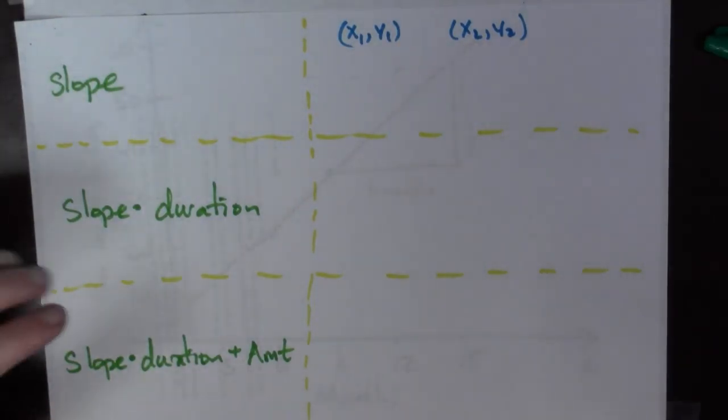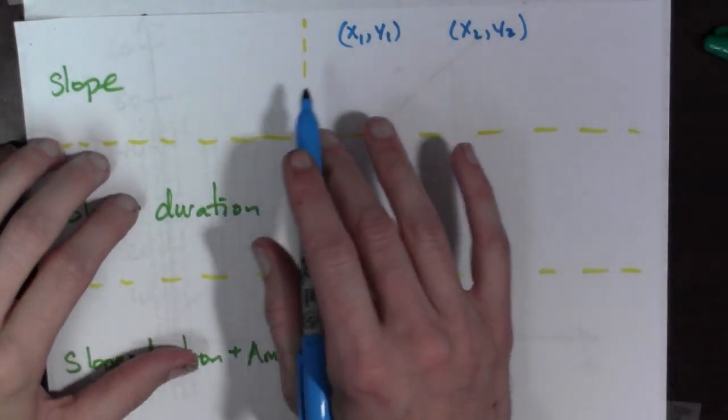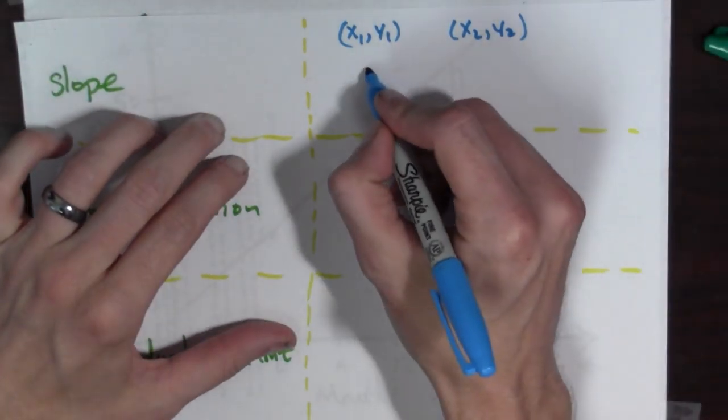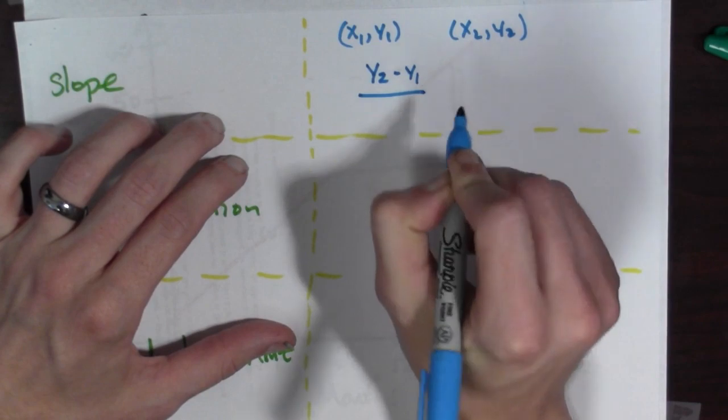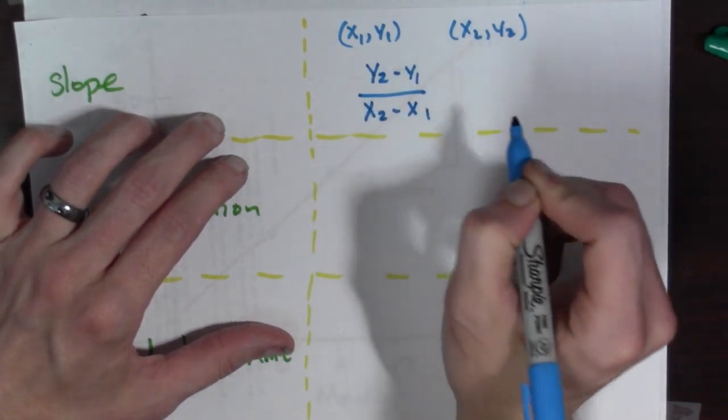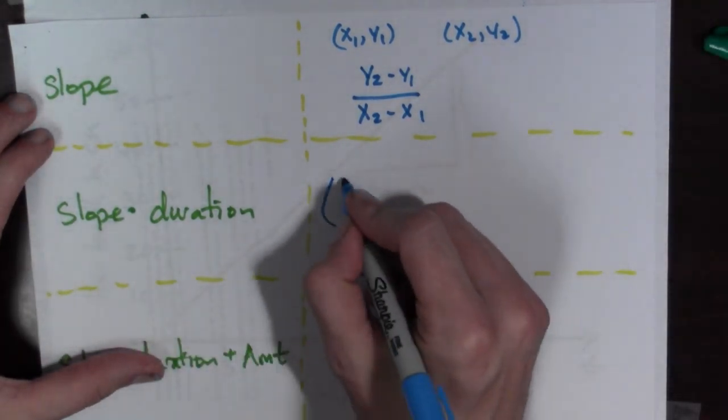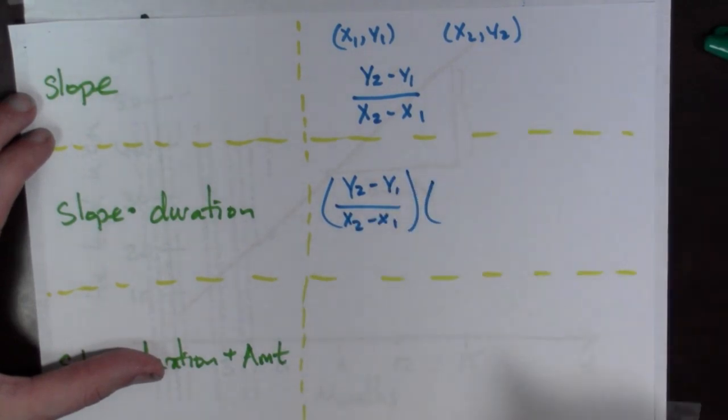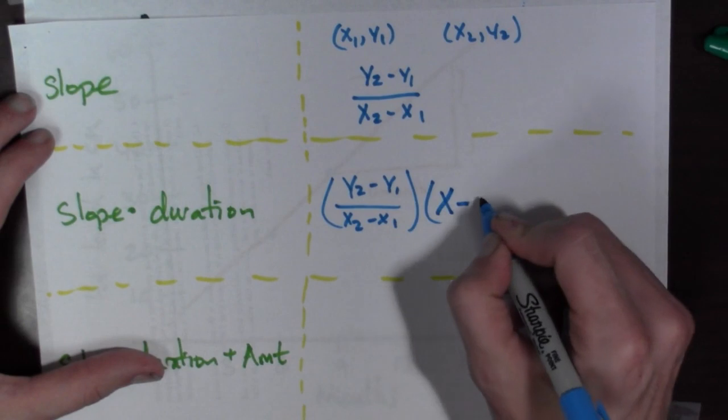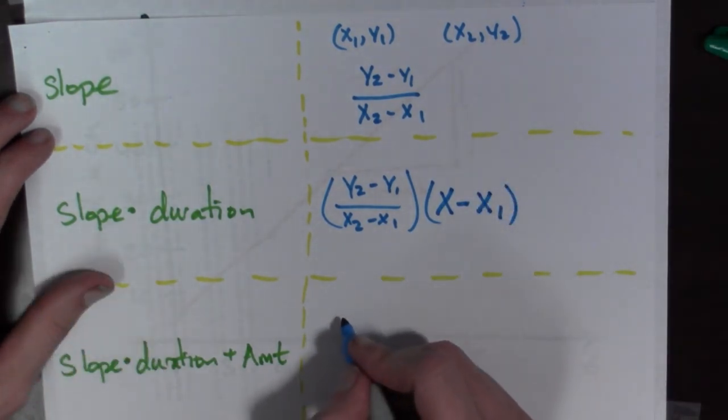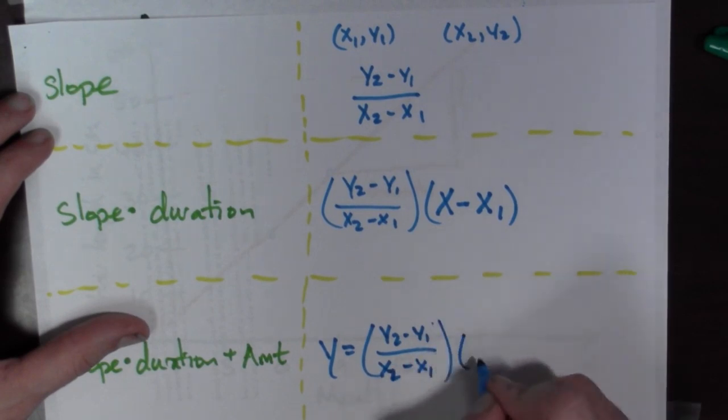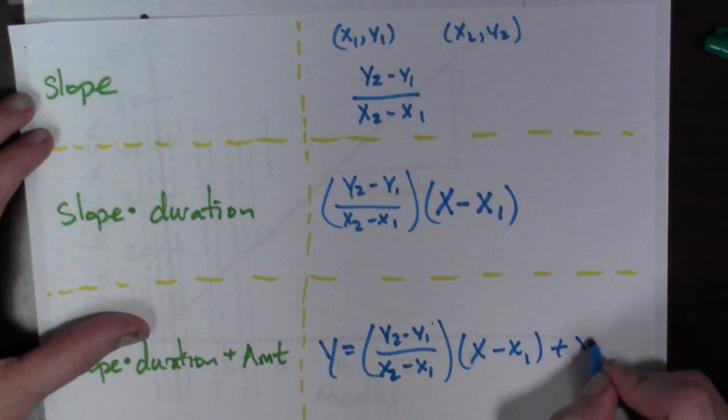Now let's push this a little further. Let's really use some algebra here. Suppose we have our points x1, y1 and x2, y2. Again, first we found slope. And we should all know that slope is y2 minus y1 all over x2 minus x1. There's our slope. And then we did slope times duration. So that's going to be y2 minus y1 all over x2 minus x1 times however much time has passed, which is x minus x1. And then our final formula will be y equals y2 minus y1 all over x2 minus x1 times x minus x1 plus y1.